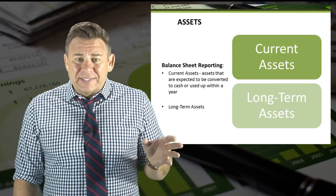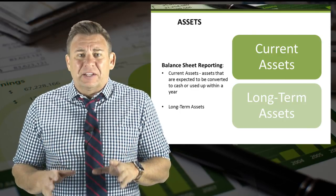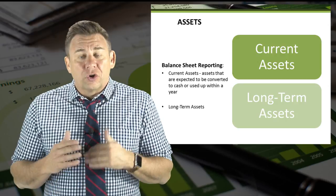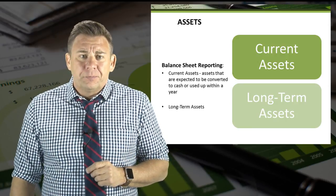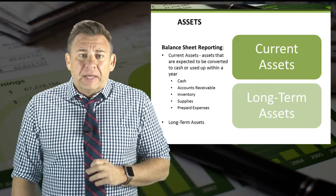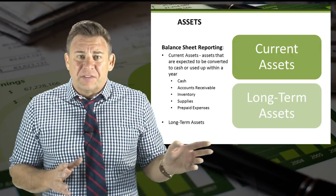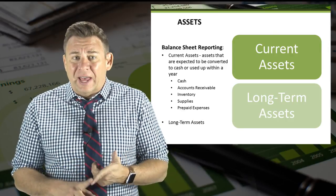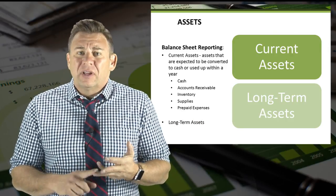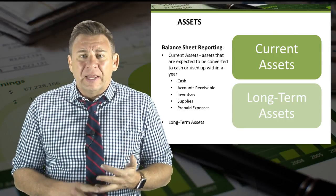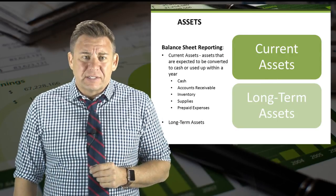Current assets are assets that are expected to be converted to cash or used up within one year. Some common examples of current assets are listed on the slide and include cash, accounts receivable, inventory, supplies, and other prepaid expenses.